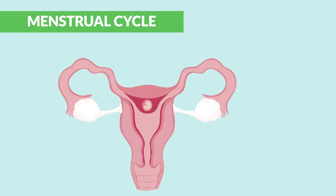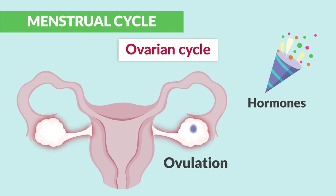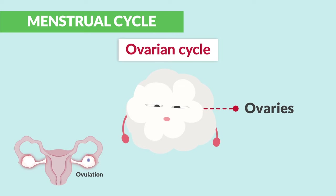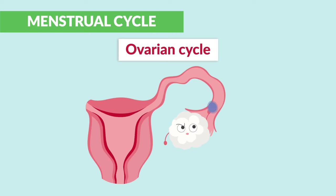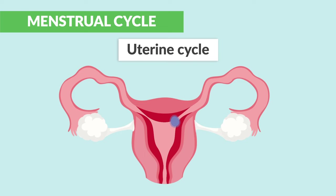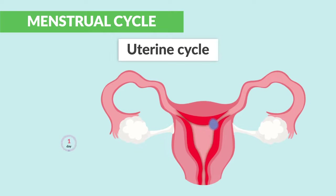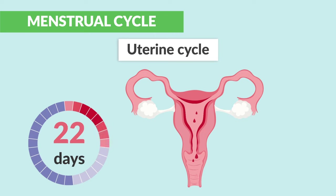In more technical terms, the ovarian cycle is where hormonal changes trigger the ovaries to release an egg — this is called ovulation. Think of the ovaries releasing the oval-shaped egg during ovulation, like tossing a ball over to the uterus. The second cycle is the uterine cycle, the catching phase, where the endometrium beefs up really thick to house a fertilized egg. But if the egg is not fertilized within 14 days, it will shed each month, causing menstrual bleeding.